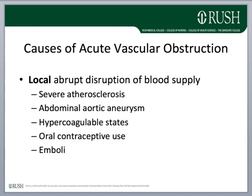The causes of acute vascular obstruction are local. They include severe atherosclerosis of the celiac trunk or the superior or inferior mesenteric arteries and their major branches, abdominal aortic aneurysm compromising the ostia of these vessels, hypercoagulable states, oral contraceptive use, and emboli — such as from a vegetation on a heart valve — that dislodge and block arterial supply to the colon.